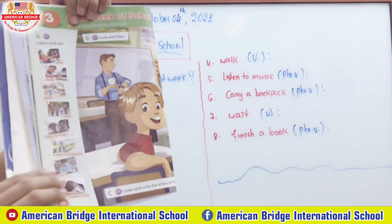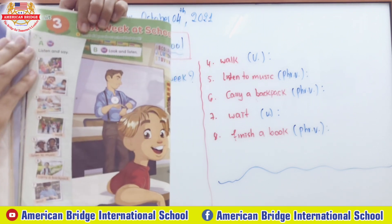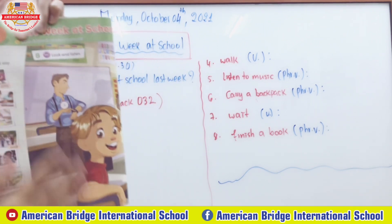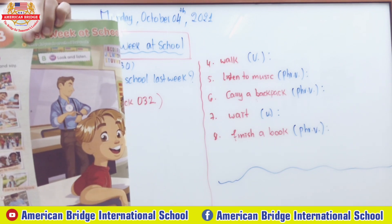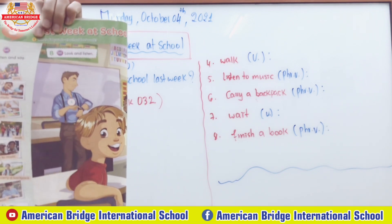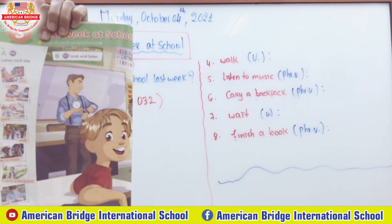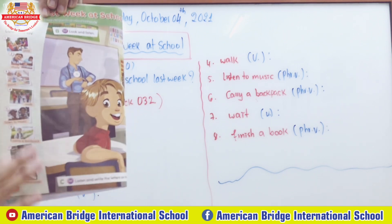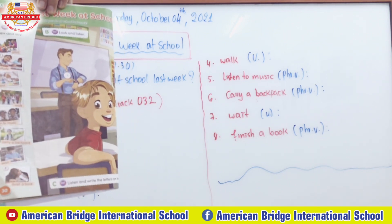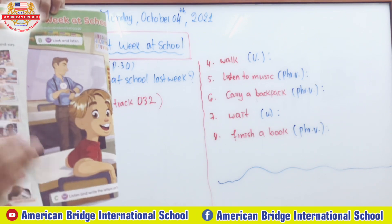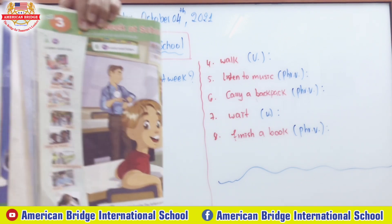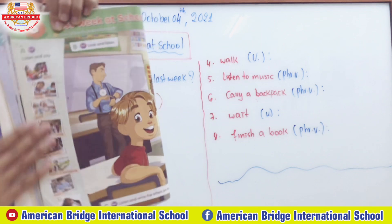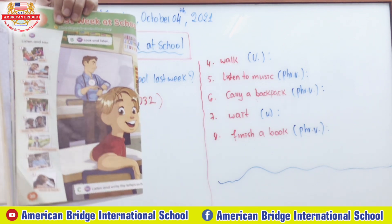You can look at the pictures first, everyone. In Section A — Listen and Say — the teacher is going to play the track for all of you, so you can listen to the track and try to listen carefully to how they pronounce each word. There are eight words here, from number one to number eight, that you can find on Pixel T.